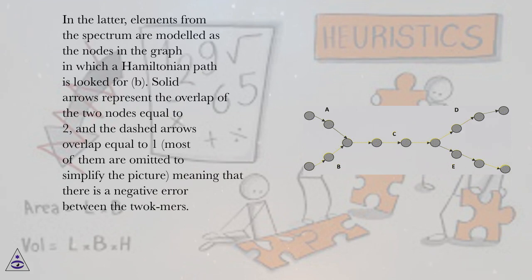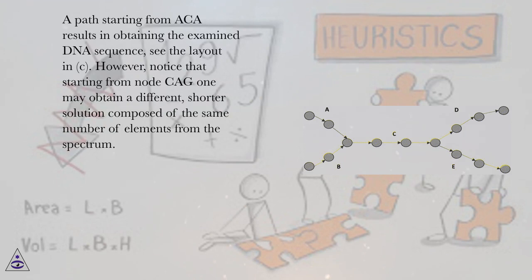A path starting from ACA results in obtaining the examined DNA sequence. However, notice that starting from node CAG1 may obtain a different, shorter solution composed of the same number of elements from the spectrum.